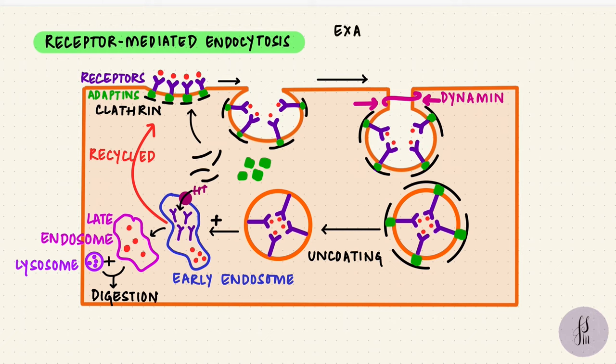A classic example used for receptor-mediated endocytosis is with low-density lipoprotein receptors, which take up LDL cholesterol from blood. It goes through this process in the cell and gets broken down to cholesterol. So that's just an example of receptor-mediated endocytosis.